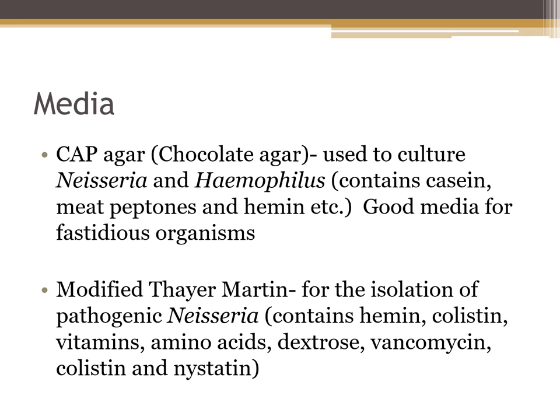We can also use modified Thayer-Martin, which suppresses non-Neisseria pathogens and other organisms while allowing Neisseria gonorrhoeae and Neisseria meningitidis to grow. The best approach is to put our sample on both a chocolate agar and a modified Thayer-Martin plate, then incubate those plates in CO2 at 35 degrees with increased humidity. Modified Thayer-Martin is both enriched and selective.